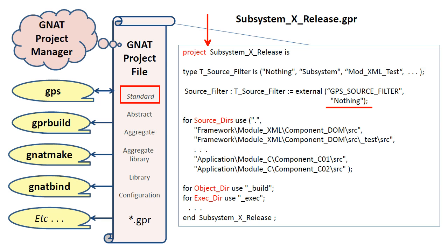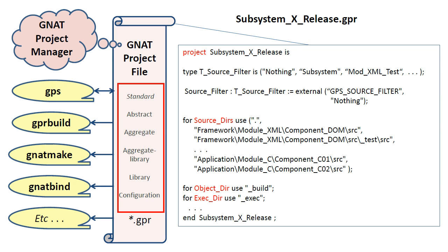Since the default scenario of this project is nothing, which means no sources are loaded at startup, then strictly speaking it is not of type standard. If we qualify it as such, the project manager will reject it with the message 'no sources found.' Therefore, it appears that this project represents a special case. So the only thing to do is leave out the qualifier and let the project manager figure it out. The point is that if your project needs to enforce certain rules, then if possible, be explicit and specify the appropriate qualifier.